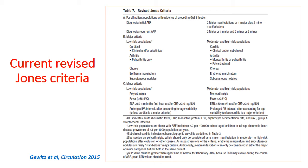The population is classified into low risk and high risk. For major criteria, low risk and high risk populations are similar except for arthritis. In low risk populations, polyarthritis is required for arthritis as a major criterion. While in high risk populations, either polyarthritis, monoarthritis, or even polyarthralgia are considered major criteria. For minor criteria in low risk populations: polyarthralgia, fever more than 38.5°C, ESR more than 60, and prolonged PR interval. In high risk populations: monoarthralgia, fever more than 38°C, ESR more than 30, and prolonged PR interval are considered minor criteria.